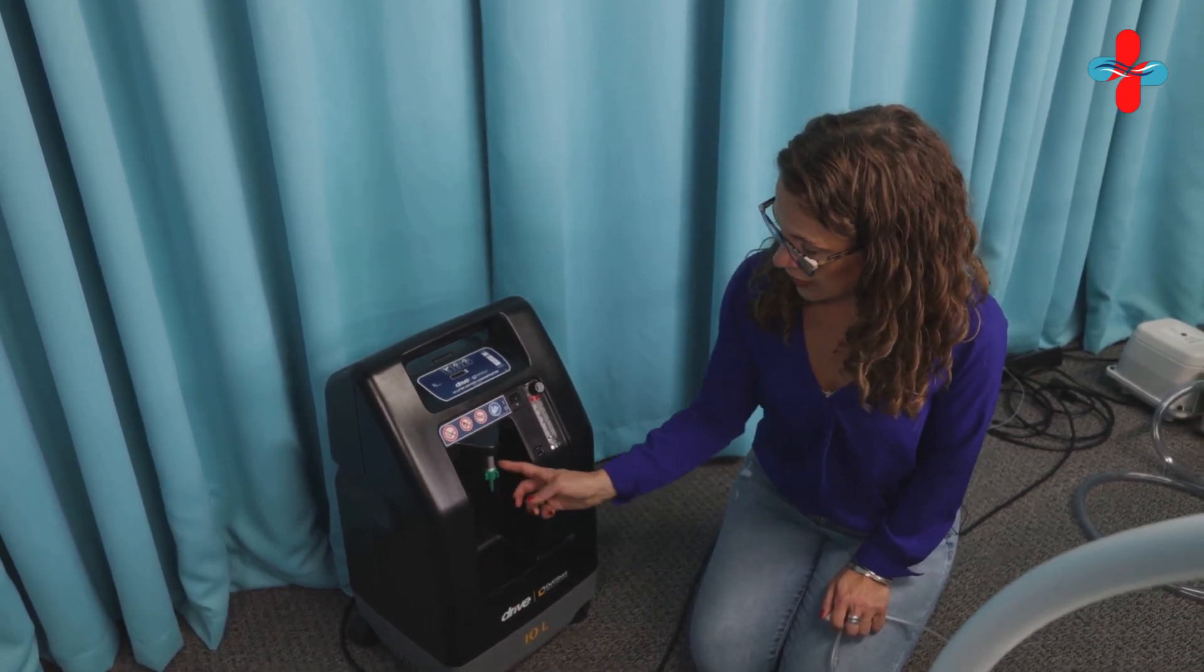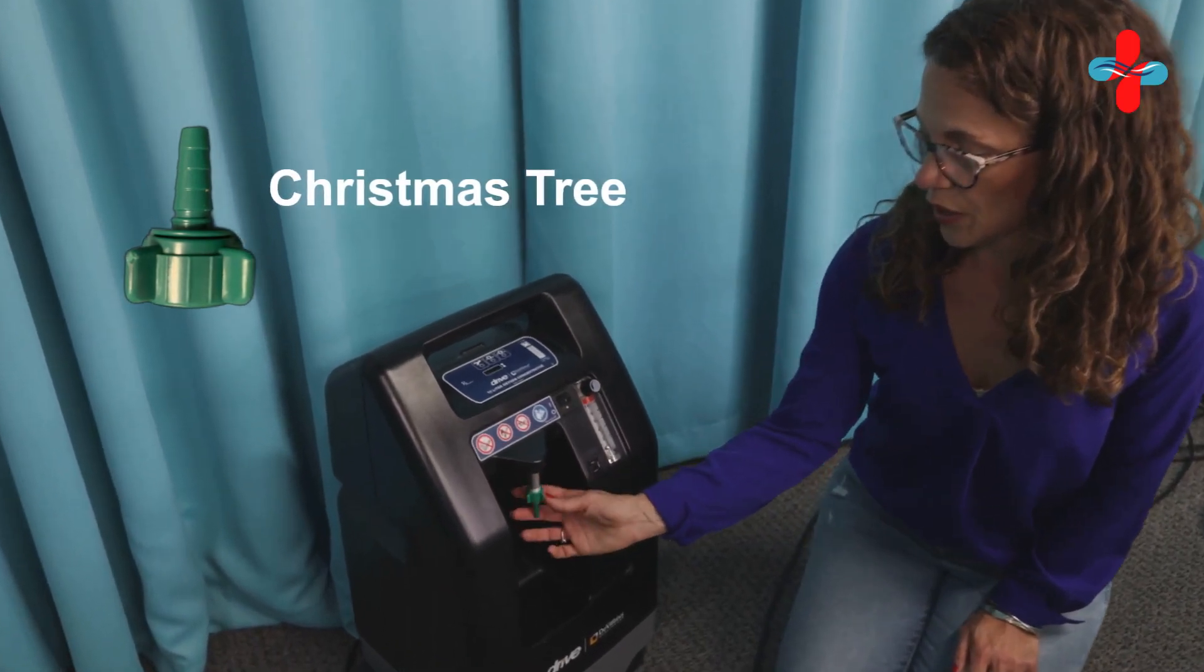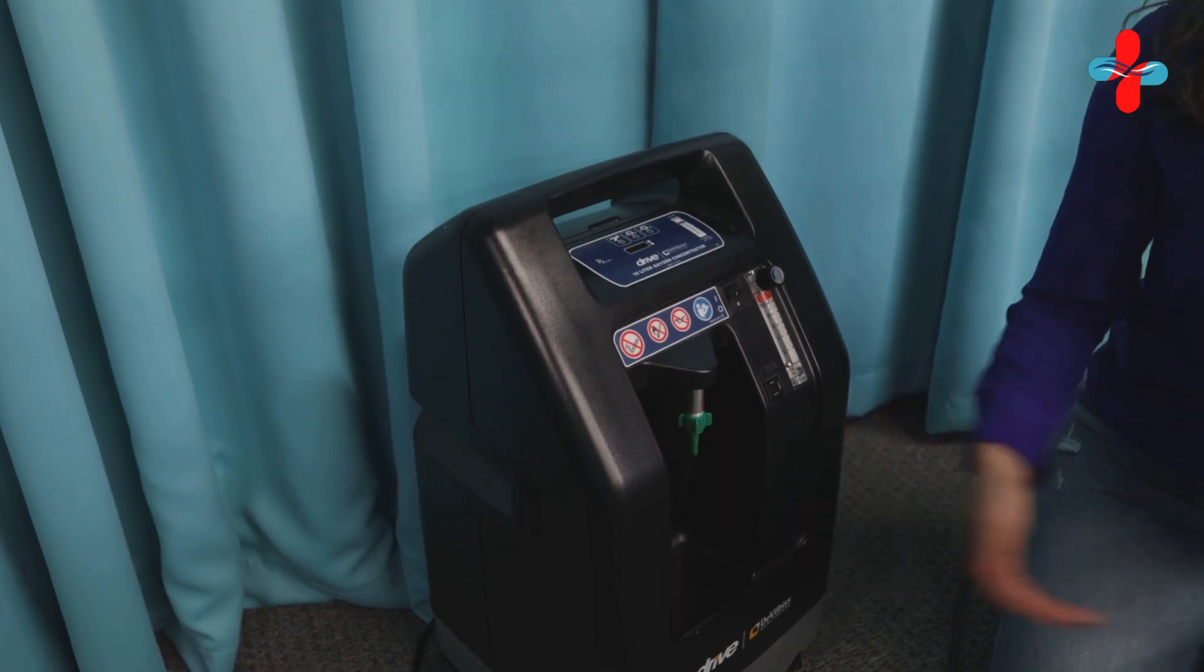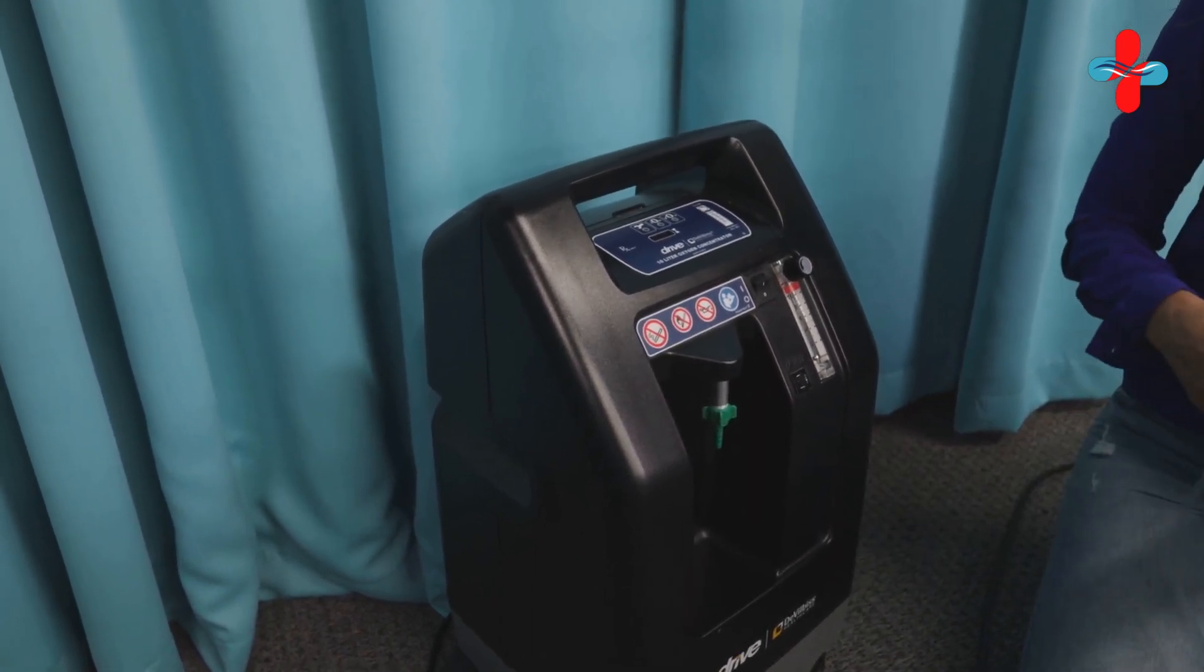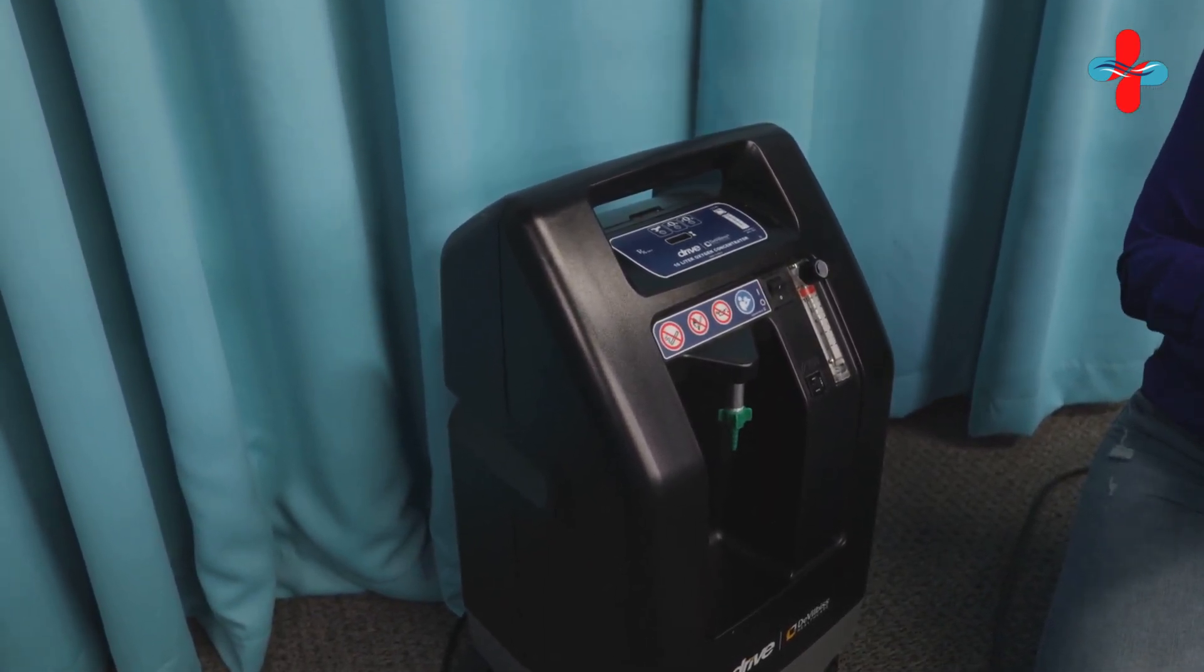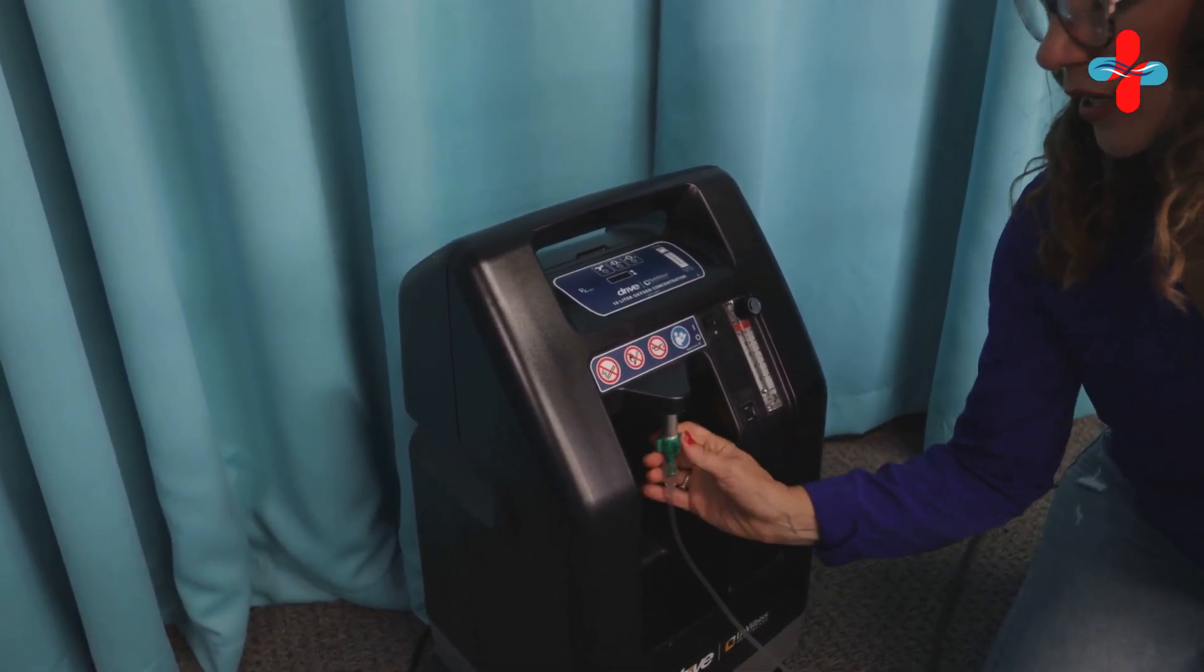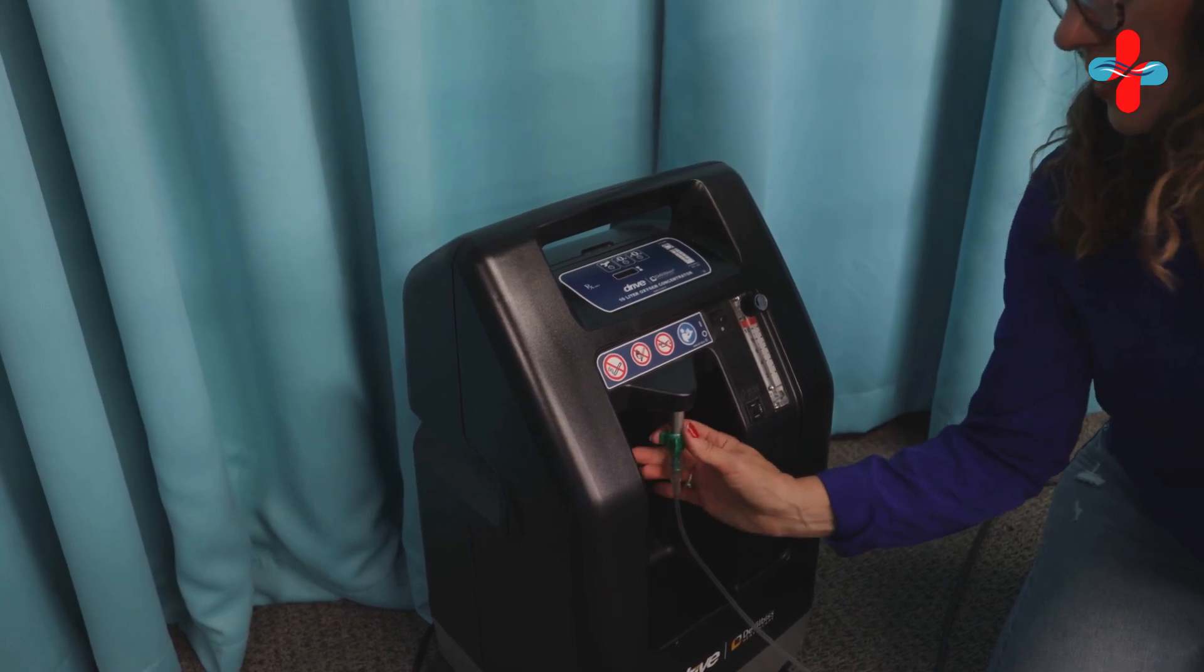You'll get this little Christmas tree adapter. You just want to screw this directly onto the concentrator. Then you'll get a hose, and we're attaching this end of the hose right directly on here. We want to make sure it's nice and tight.